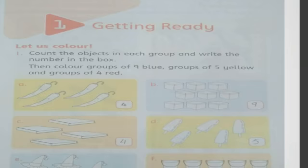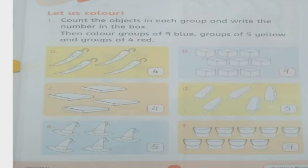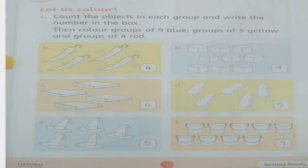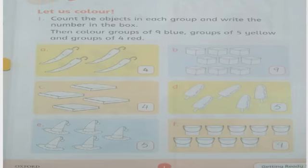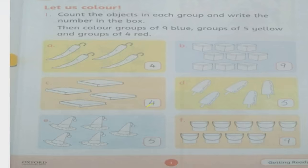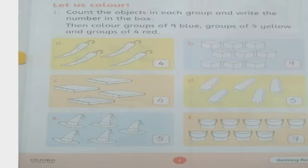Now we will move to part C. In part C we have books. First we will count the books: one, two, three, and four. How many books are there? Four. We will write the number in the block, and then we will color it.